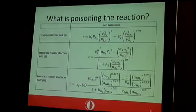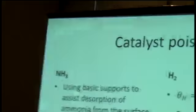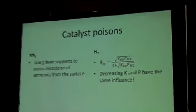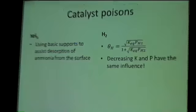So get rid of those poisons and increase the rates. How can we get rid of ammonia? We can use basic support to assist desorption of ammonia to kick it from the surface. Or published literature suggests that you could absorb it in the reactor to remove ammonia from the reaction medium so that you will drive the reaction towards right. For hydrogen, of course, it is also a poison.